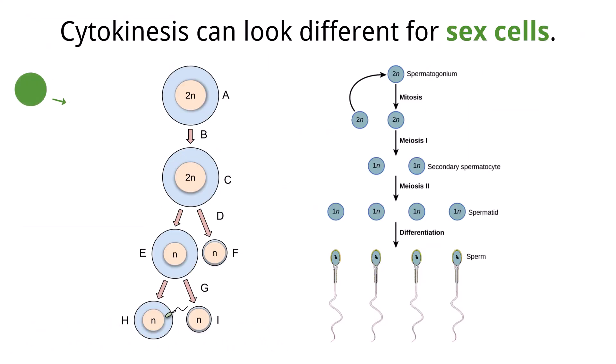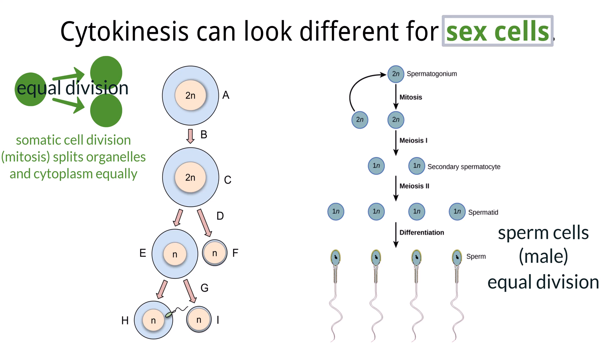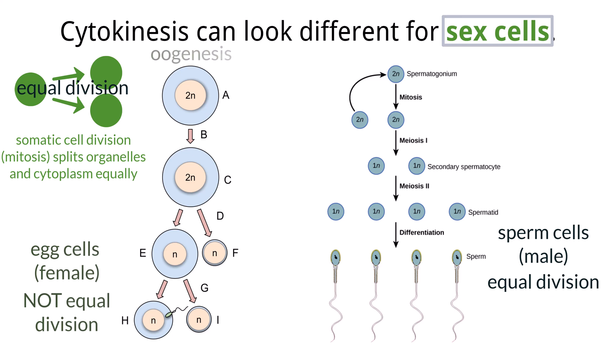When parent cells divide to produce two daughter cells in body tissue, the division of cytoplasm and organelles is equal, so that each new daughter cell is identical and equal in size to the parent cell. Cells undergoing mitosis have equal division of cytoplasm, as do sperm cells in meiosis. An example of when this division of cytoplasm is not equal is the production of egg cells, oogenesis. During this process, only one large egg, or ovum, is produced, as well as two to three smaller cells called polar bodies.